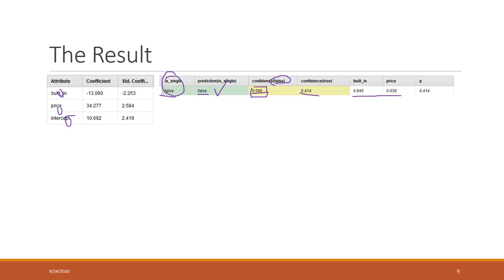We also have the other variables like the year the house was built and the price. Those two values are normalized, scaled to a range between zero and one. Normalizing variables for logistic regression is optional — it is not required. Whether you normalize your attributes or not, the result will be the same. The p-value is the probability of being a single-family home, which is similar to the confidence for true.